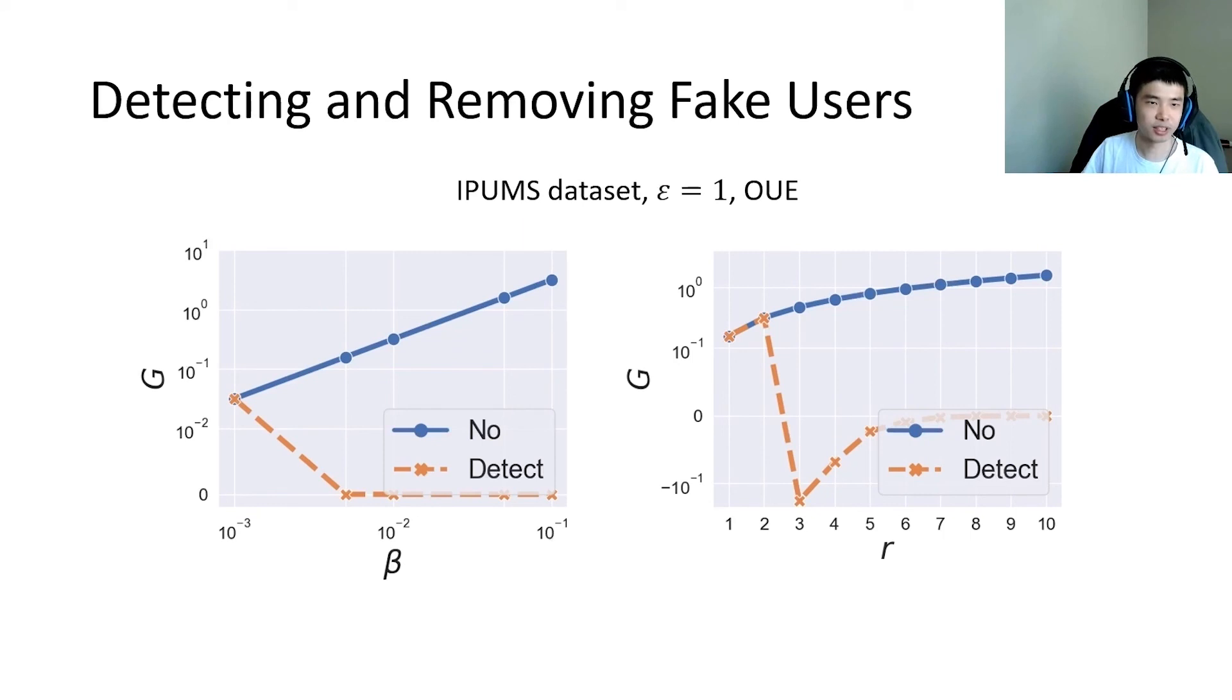Here we show the results of detecting and removing fake users. We can see that when the fraction of fake users β and the number of target items r is large, item set mining can effectively detect the fake users, and the overall gain drops to nearly zero.